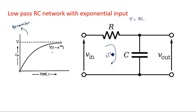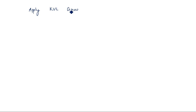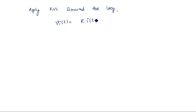For this network with applied input voltage V_in(t), the current i(t) flows through the resistance and capacitance in the loop. Applying KVL around the loop: V_i(t) = R·i(t) + V_naught(t).